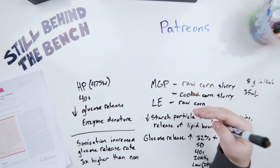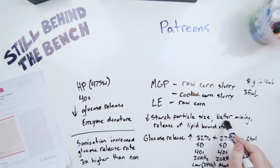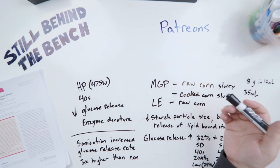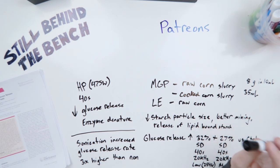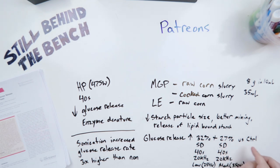Some of the finer points of this study are that the increases in glucose release are due to a decrease in starch particle sizes, better mixing due to the streaming effect, and release of what are called lipid bound starch molecules. The enzymes can't attach to the starch if the starch is stuck to the lipid so a benefit of using this ultrasonication is it seems to break them apart. They saw glucose release increases. They measured the amount of glucose after enzymatic hydrolysis was finished. They saw an increase of 32% and 27% versus the control using low power and medium power respectively.